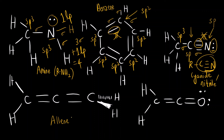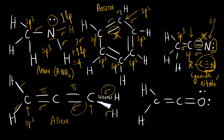For allene (H₂C=C=CH₂), the terminal carbons each have three sigma bonds — sp2 hybridization. The central carbon forms only two sigma bonds (one to each terminal carbon), with two pi bonds — steric number two, so the central carbon is sp hybridized. This explains the unique geometry of allene that we studied in stereochemistry and cumulenes.